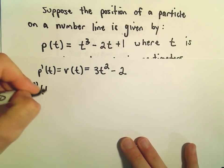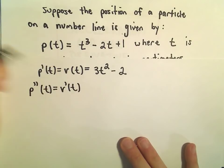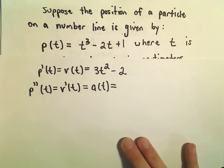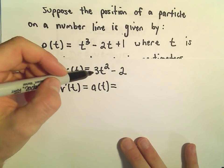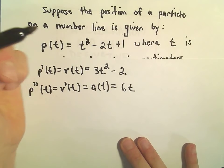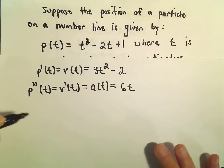So if we take the second derivative of position, or equivalently the first derivative of velocity, that's going to give us our acceleration function. And if we take the derivative of 3t squared, we'll just get 6t to the first power. And then our negative 2, when we take the derivative of that, that'll just become 0.